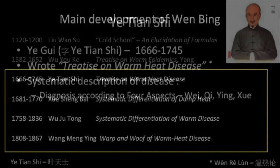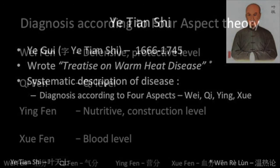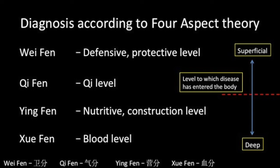Perhaps the most renowned doctor in Wenbing theory was Ye Tian Shi. Coming from a family of doctors, he also benefited extensively from education by a number of other physicians. In his book, The Treatise on Warm Heat Disease, he systematized differentiation according to the four levels or aspects — that is, Wei, Qi, Ying, and Xue. Ye Tian Shi gives these terms a slightly different interpretation, in that they become a measure of the degree to which the pathogen is affecting the body.